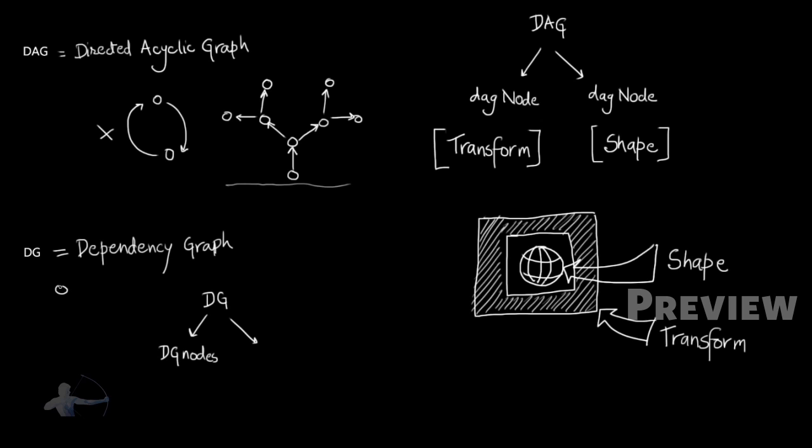Dependency Graph is also a directed graph, but it can be cyclic, unlike DAG, which can't be cyclic.